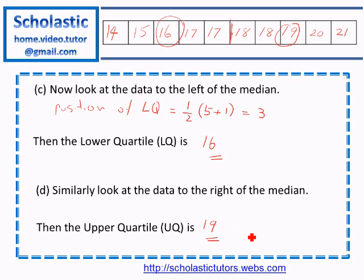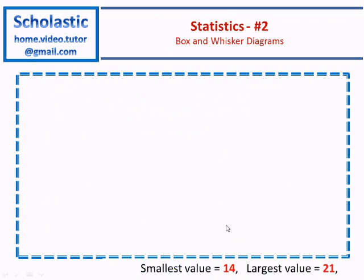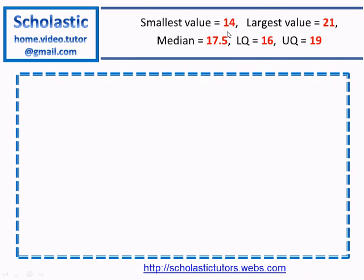So now we've found all five key values: the smallest value is 14, the largest value is 21, the median is 17.5, the lower quartile is 16, and the upper quartile is 19.